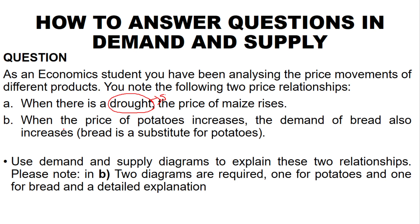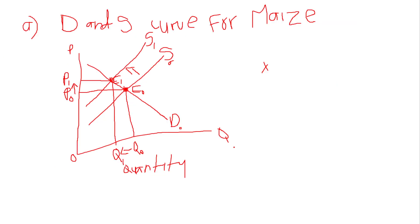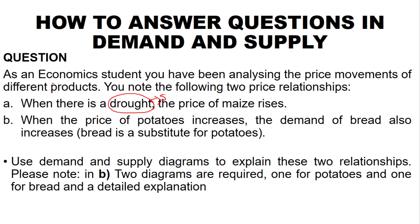Let's move on to the next part. Part B says: when the price of potatoes increases, the demand for bread also increases, and bread is a substitute for potatoes. We know that substitutes cause a shift of the demand or supply curve. In this case, since the demand for bread increases, we are dealing with demand and not supply. The question requires two diagrams — one for potatoes and one for bread — and a detailed explanation.